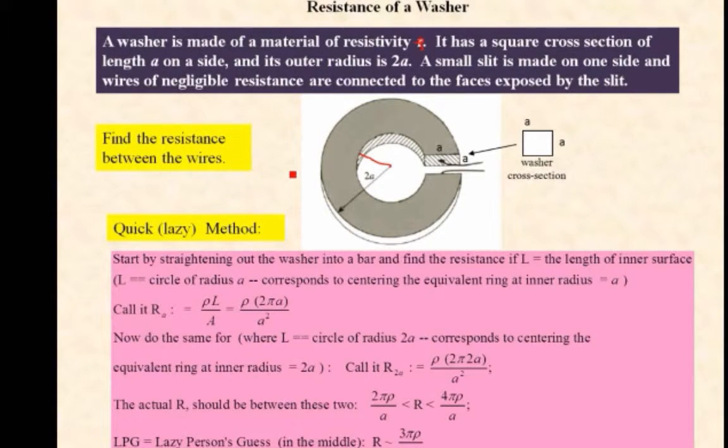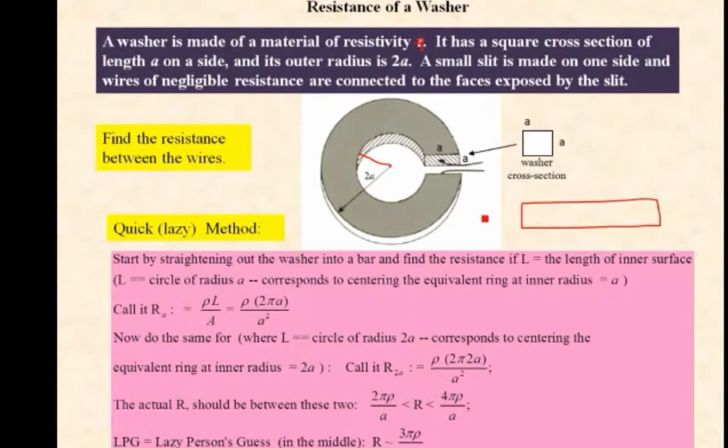I'm going to show you a quick lazy method. What we do is we take this washer and just straighten it out. So we just bend it back into a rectangle. The question is, what lengths to take? And we're going to take two lengths. One would be equivalent to the circumference of the inside. The other would be the circumference of the washer on the outside. The real resistance should lie in between. This is too long. This is too short. And so we'll find perhaps an approximation for this resistance.